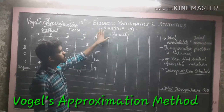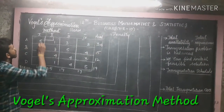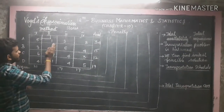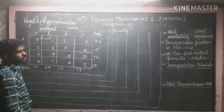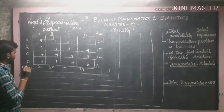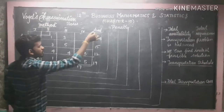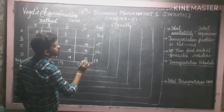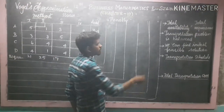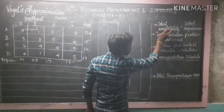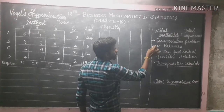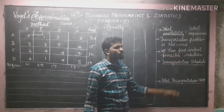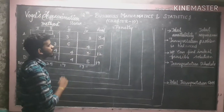Today we are going to see 12th Business Maths Chapter 10 — Vogel's Approximation Method. It is similar to the North West Corner method and the Least Cost method. The first step: the total requirements must equal total availability. The total requirement is 80 and the total availability is also 80, so the transportation problem is balanced. We can now find the initial feasible solution.